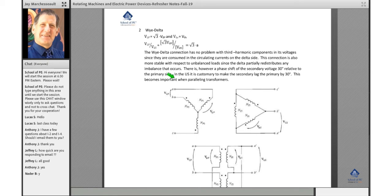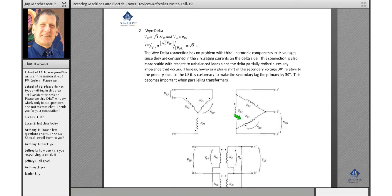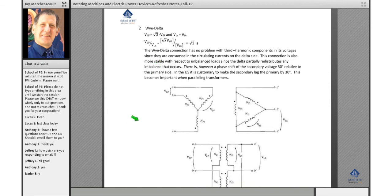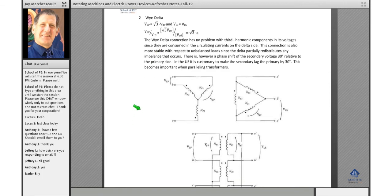Now the Y delta connection has no problems with the third harmonic components, since they're consumed in the circulating currents of the delta side. It's also more stable with respect to unbalanced loads, since the delta partially redistributes any imbalances that occur. But there is a phase shift. So you've got a phase shift between this line voltage and this line voltage of 30 degrees, depending on ABC or ACB rotation.